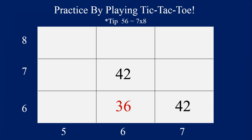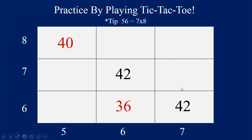Now it's your turn, and you'd notice I have two in a row. If I got the top left corner, I would win. So you'd probably want to block me by winning that square. To win it, you'd solve 8 times 5 — the two numbers that meet in that square — and 8 times 5 equals 40. You blocked me! Now it's my turn, and I'm going to try to win the middle right square. The equation is 7 times 7, and the answer to 7 times 7 is 49, so I write 49 in black.